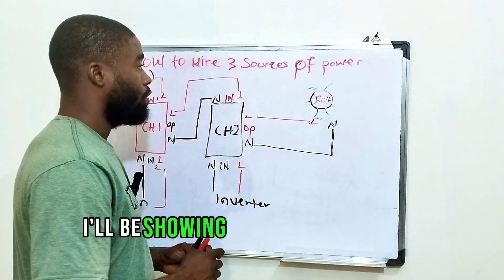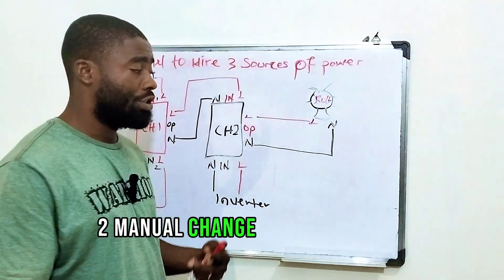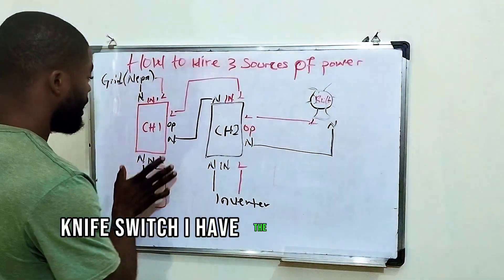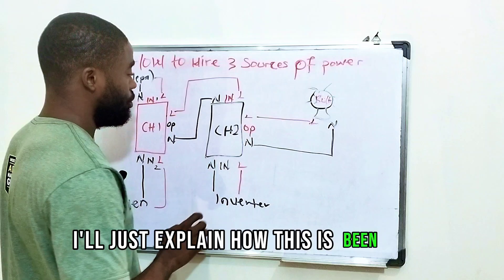So today I'll be showing you how to wire three sources of light using two manual changeovers, which are popularly known as knife switches. I have the diagram already on the board. I'll just explain how this is being done.